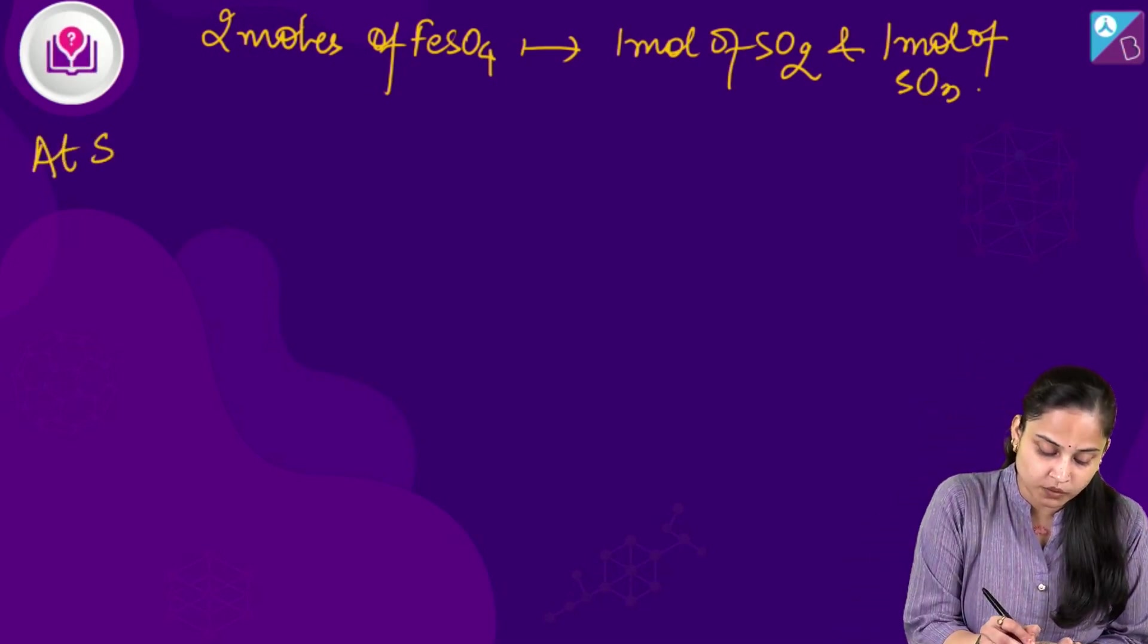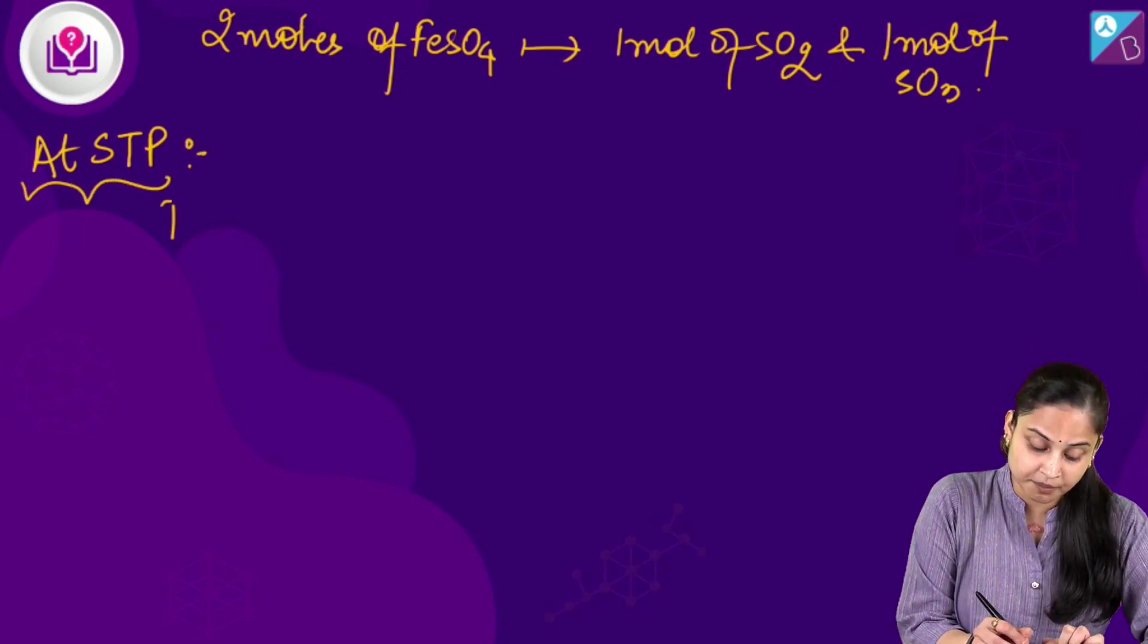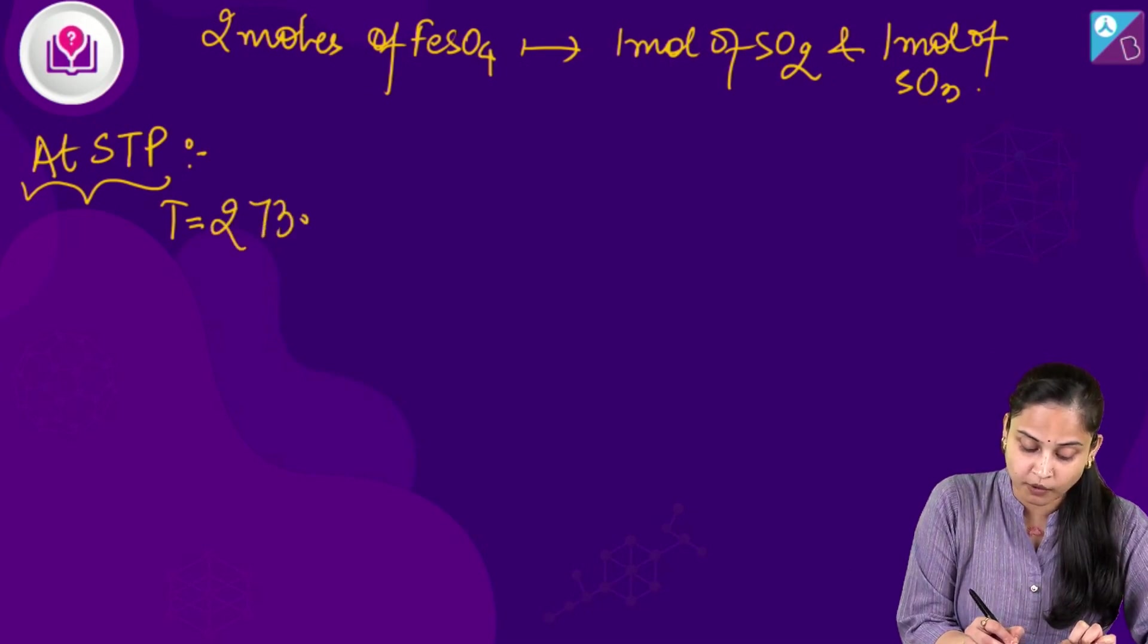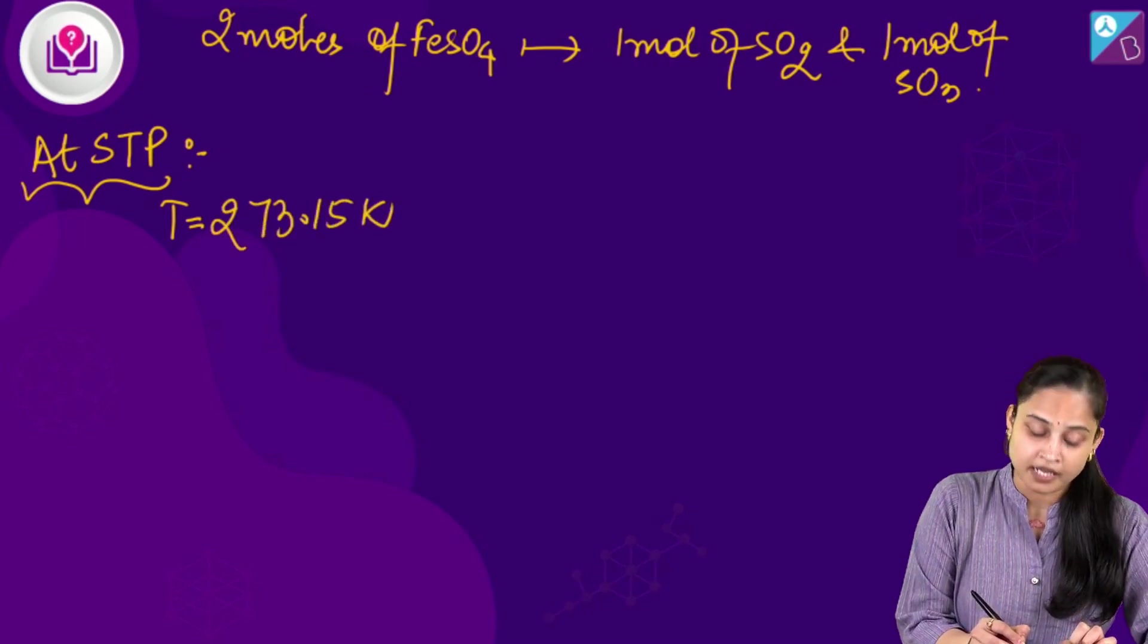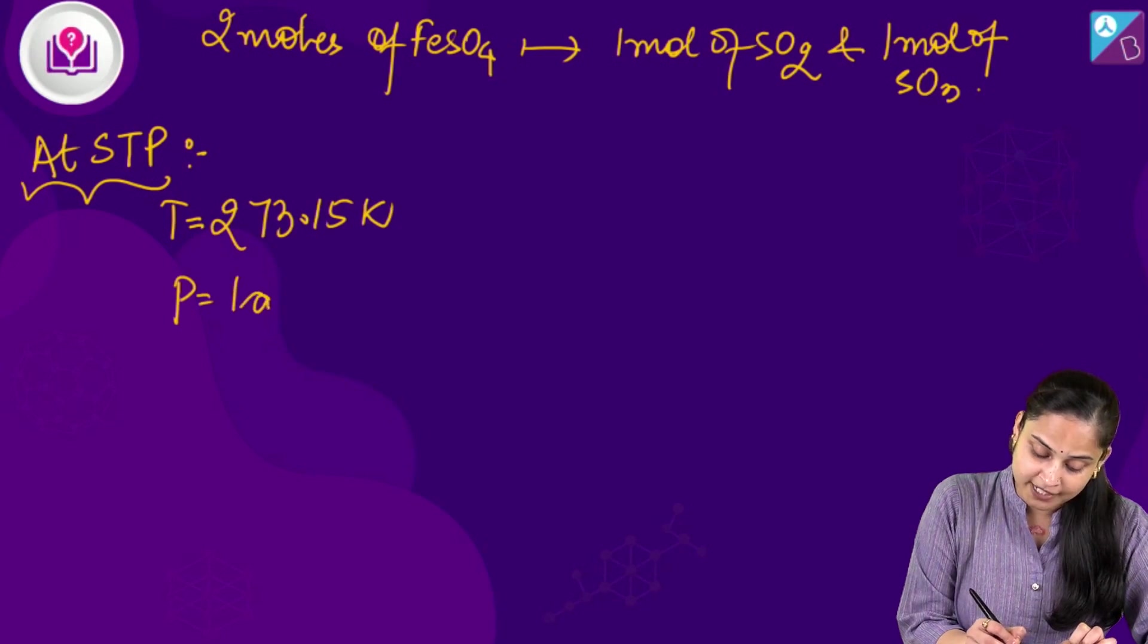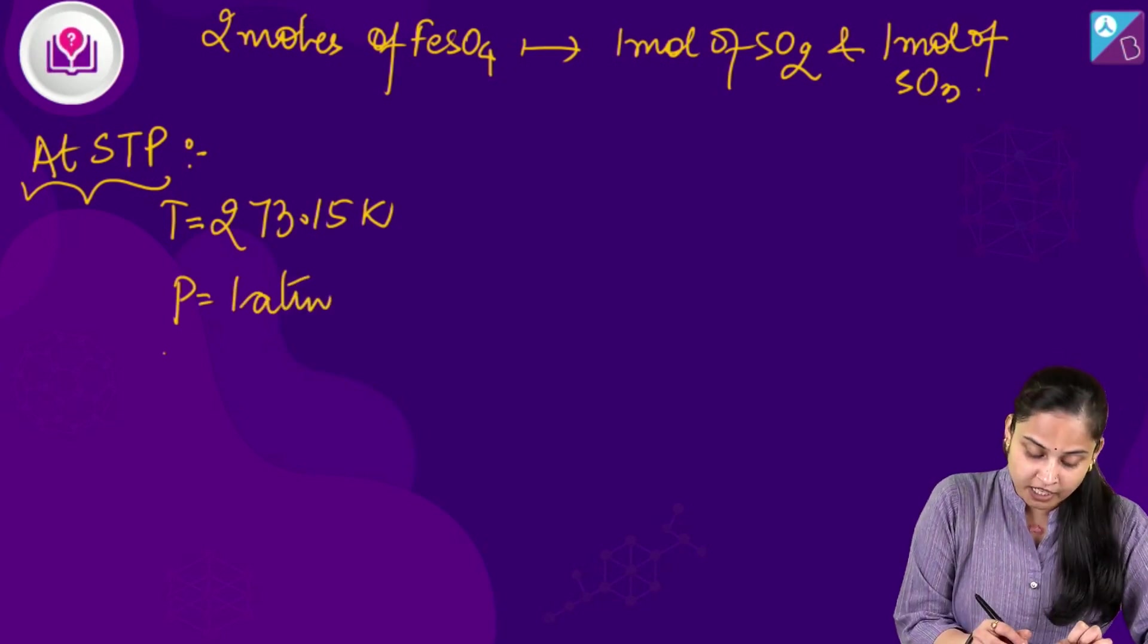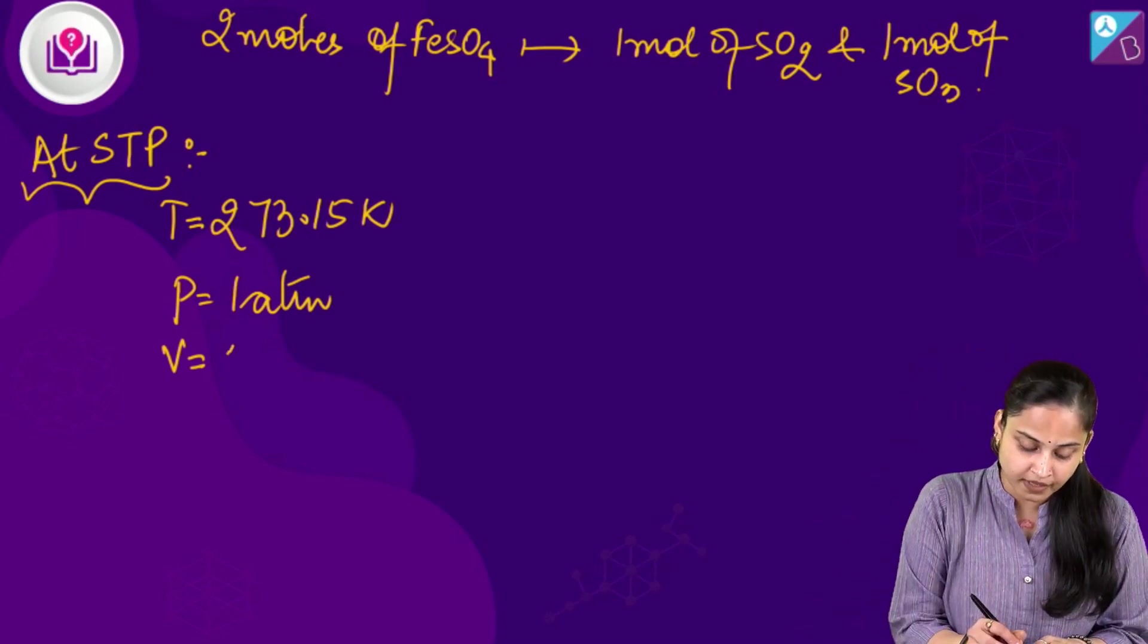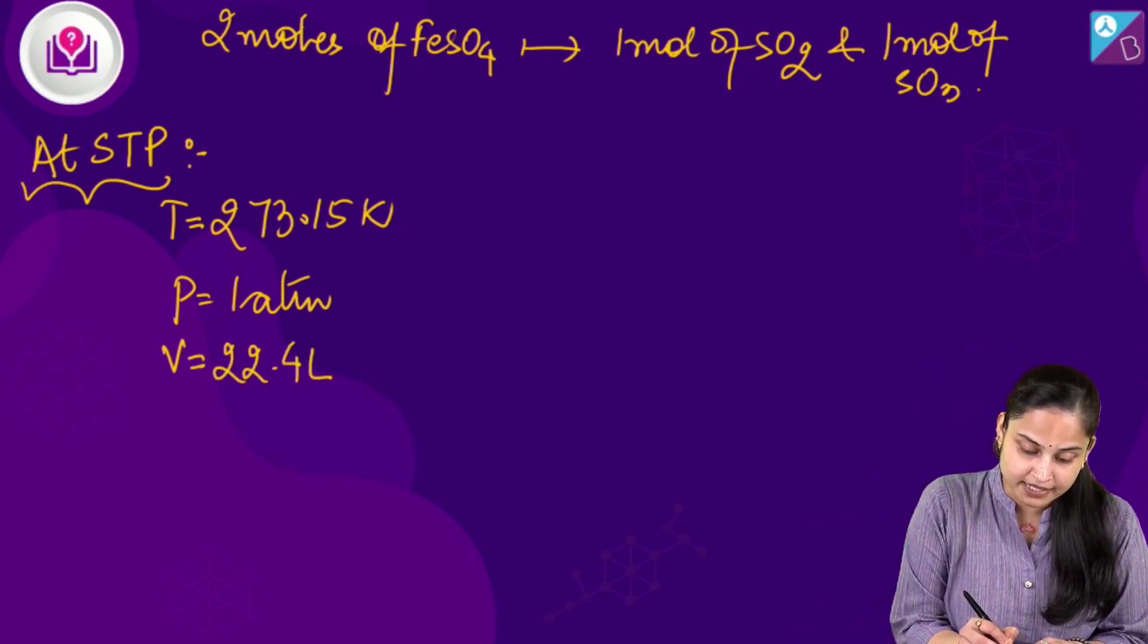Now, at STP, at standard temperature and pressure, what we know is that the temperature is 273.15 Kelvin, pressure is equals to 1 atm, and volume is equals to 22.4 litre.